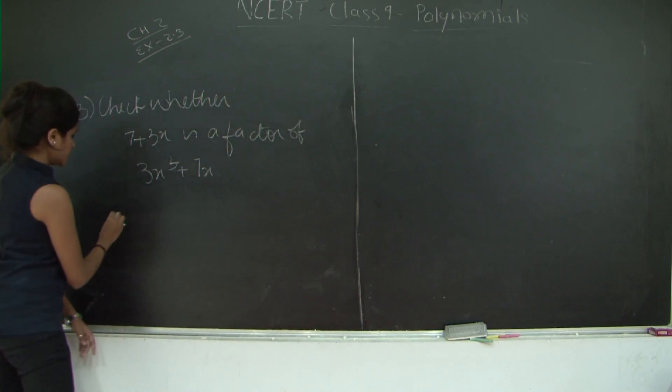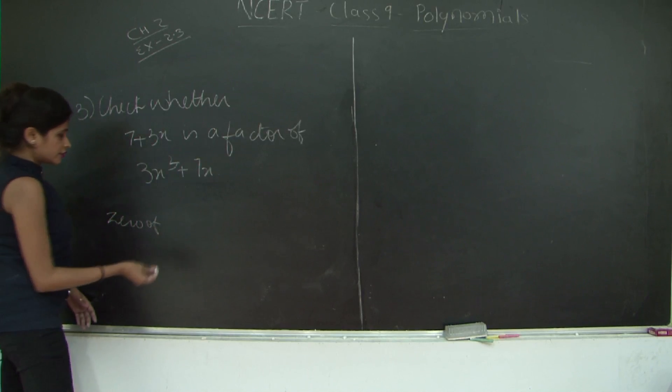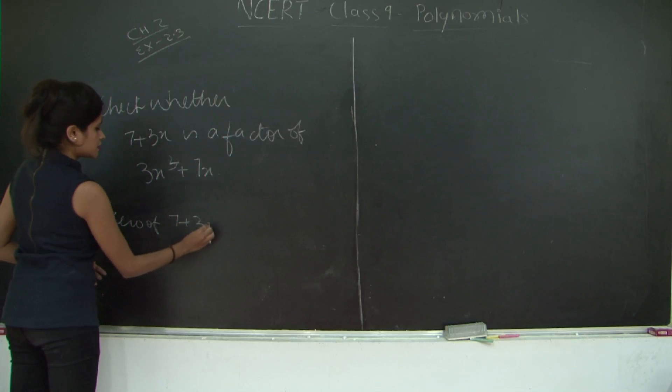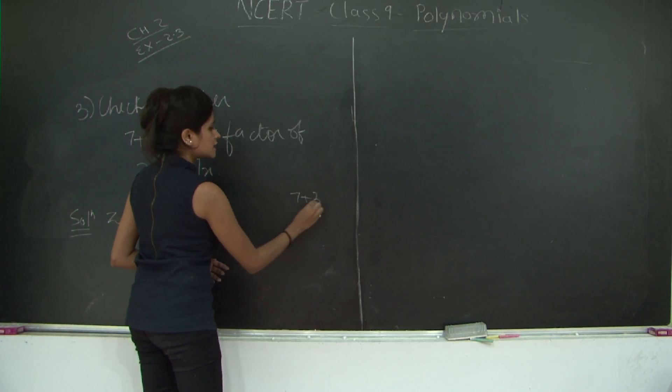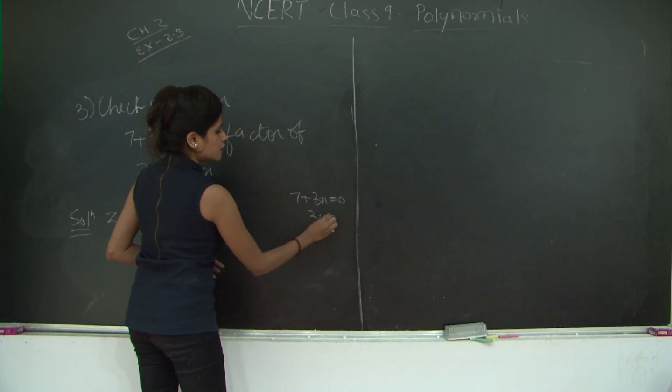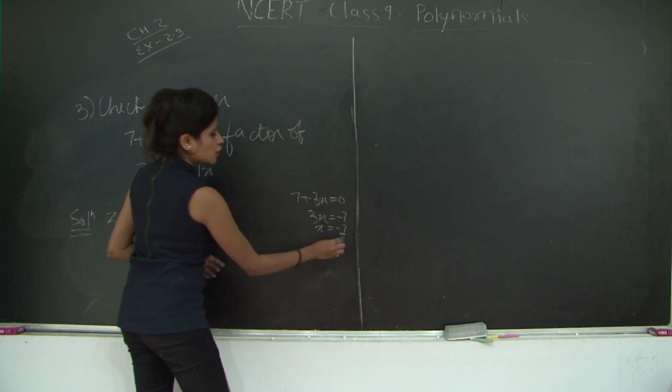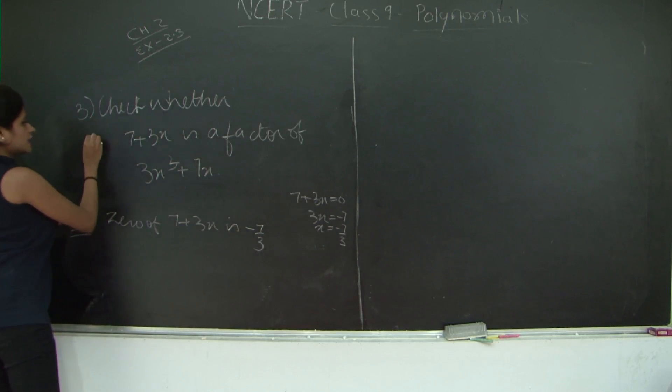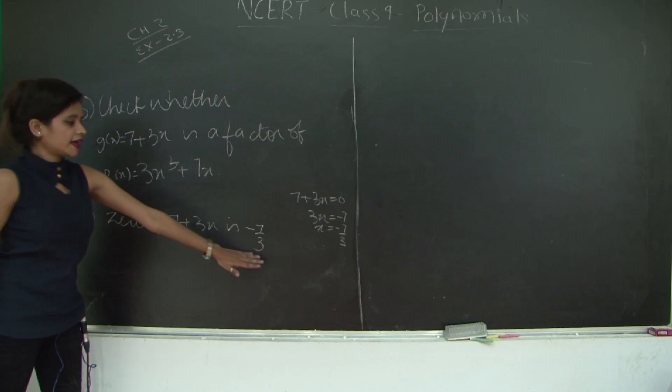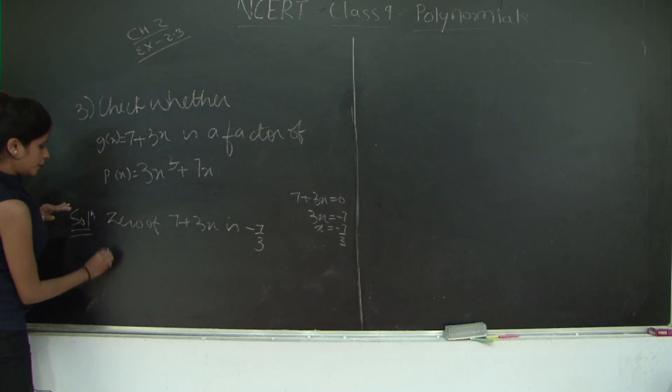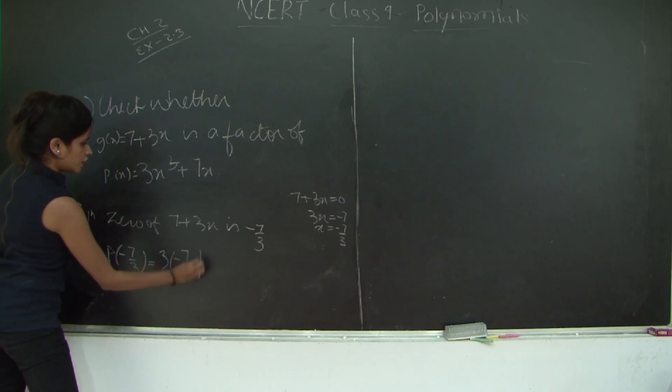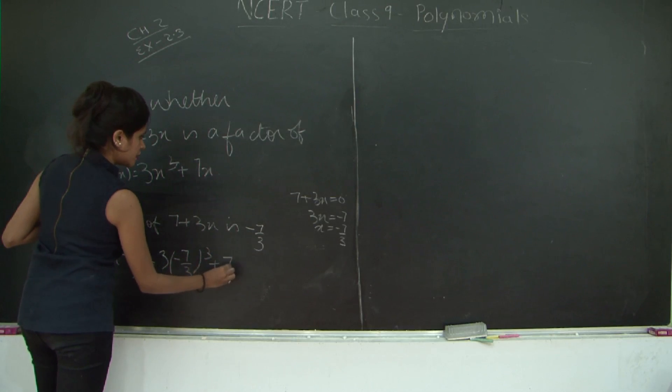Now let's check. Zero of 7 plus 3x is 0. Therefore 3x is equal to minus 7, x is equal to minus 7 upon 3. So minus 7 upon 3 is the zero of 7 plus 3x. Let us just name these polynomials. I will name this as g(x) and this as p(x). So I am going to substitute x is equal to minus 7 upon 3 in p(x). So p of minus 7 upon 3 becomes 3 into minus 7 upon 3 the whole cube plus 7 into minus 7 upon 3.